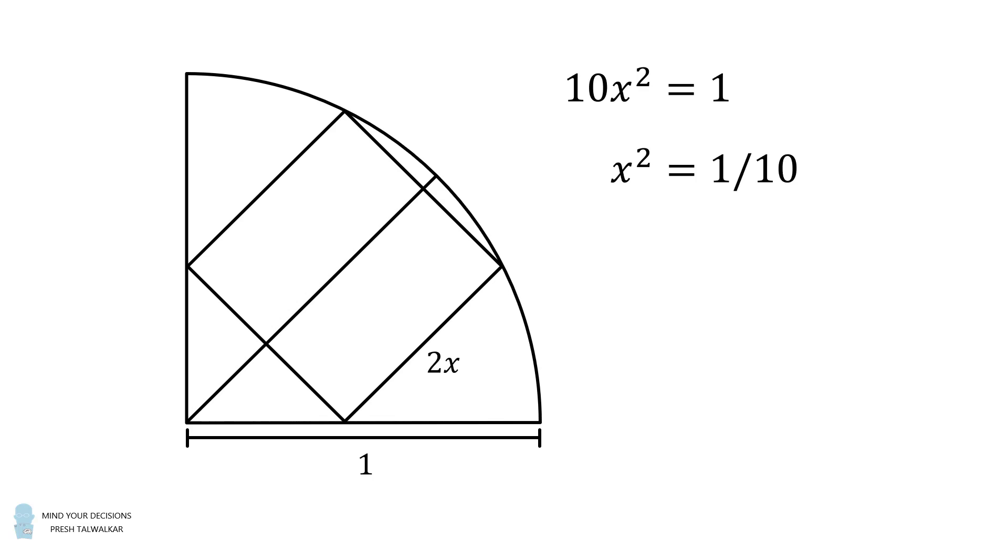We want the area of the square, which will be equal to its side length squared. So it will be equal to 2x the quantity squared, which is equal to 4x squared. But since x squared is equal to 1 over 10, we can substitute in. Thus the area of the square is equal to 4 over 10, or 0.4. And that's the answer.